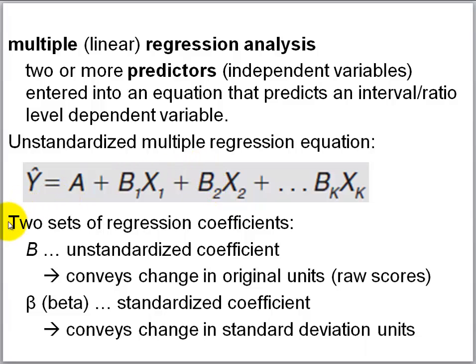When you run a computer multiple regression program, it often produces two sets of regression coefficients. It produces b's — the unstandardized coefficients — which convey change in original units, that is in raw scores. On the other hand, it also produces betas, symbolized by the Greek letter beta, which are standardized coefficients that convey change in standard deviation units.